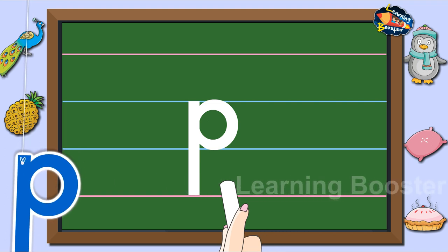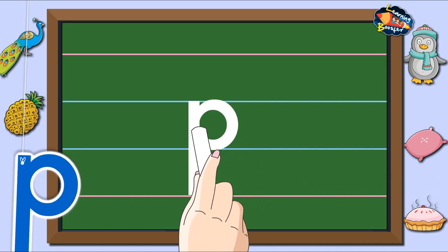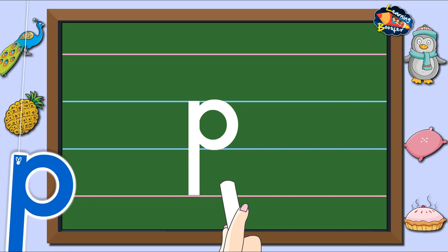Let us look at it once more. One standing line down and a curve makes letter P.